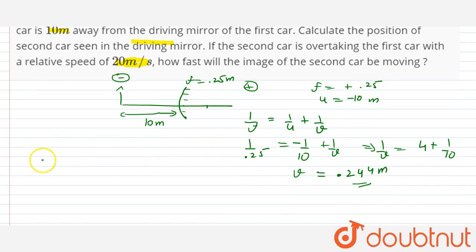Now we know that in the spherical mirrors, the velocity of image is minus magnification squared times the velocity of object. The velocity of object is 20 meter per second.